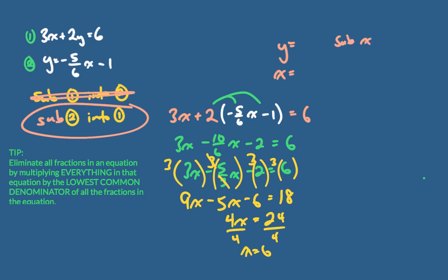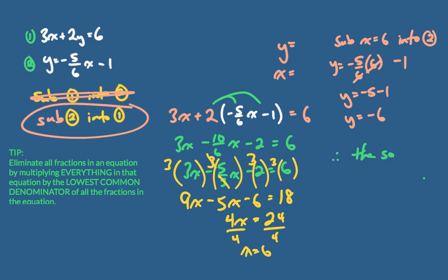I continue on by substituting x equals 6 into equation 2: y equals negative 5/6 times 6 minus 1. The 6 in the numerator and the 6 in the denominator cancel, so I get y equals negative 5 minus 1, and y equals negative 6. Therefore the solution is the coordinate (6, −6).